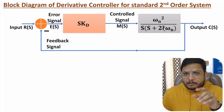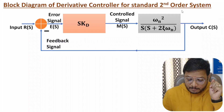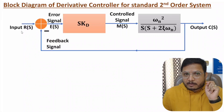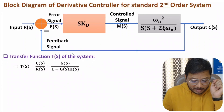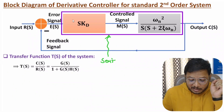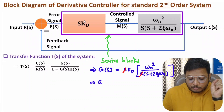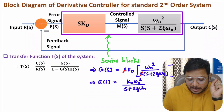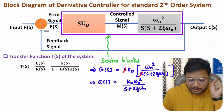Let us identify the transfer function C(s)/R(s). For negative unity feedback, the transfer function is G(s) / (1 + G(s)H(s)), where H(s) = 1. G(s) is the multiplication of the two series blocks: s·Kd × ωn² / (s(s + 2ζωn)). The s cancels, so G(s) = Kd·ωn² / (s + 2ζωn).